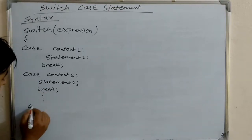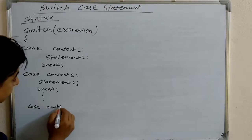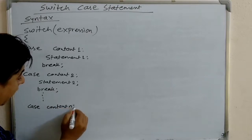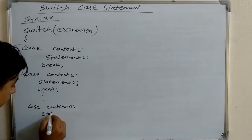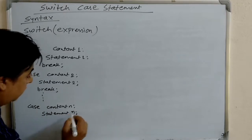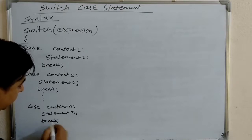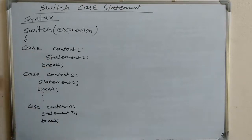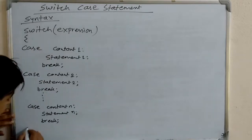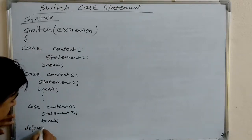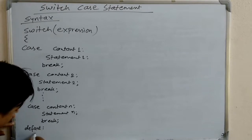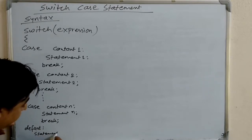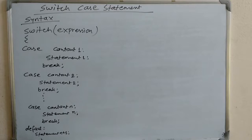In this way, we continue up to constant n, and it executes statement n, and then break. If no option is equal to or matched with the expression, then it executes the default statement. At the end we write 'default' and then statement n+1. It is not necessary to write break after the default.